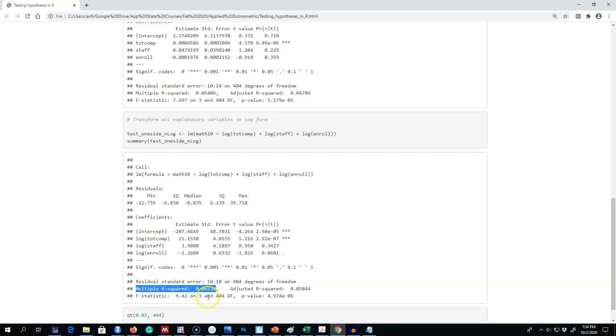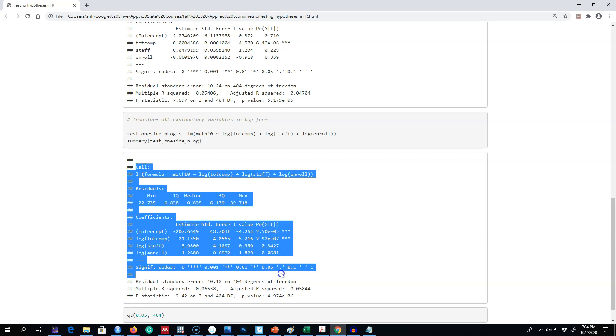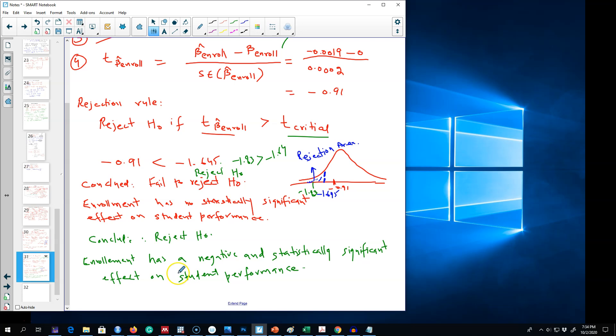What we can do here is go with this model which is fitting our data a little bit better. We're going to go with the conclusions that we get from this model and conclude that enrollment has a negative and statistically significant impact on student performance.